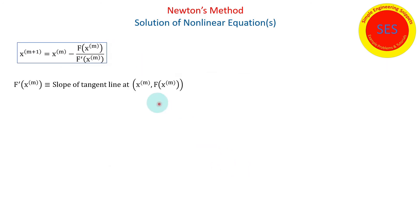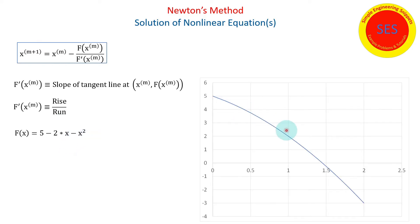Now, let's look at the graphical interpretation of Newton's method. And recall that the derivative of the function at x^(m), well, that's the slope of the tangent line. And we're going to use that to have a graphical interpretation of Newton's method. And recall that the slope is just equal to the rise over the run. And let's consider a very simple function where f(x) is equal to 5 - 2x - x squared.